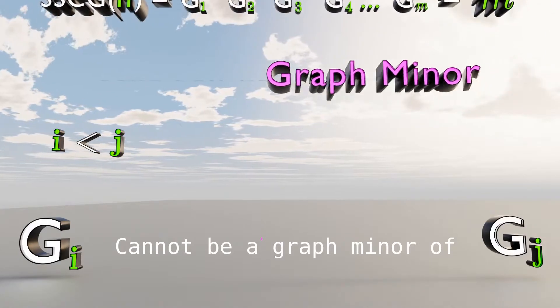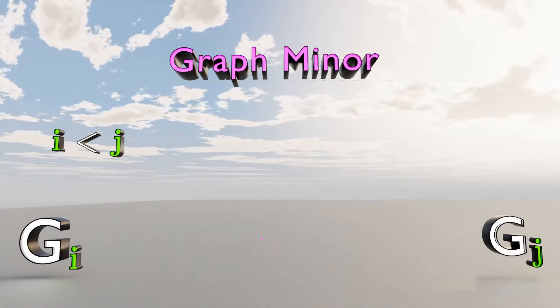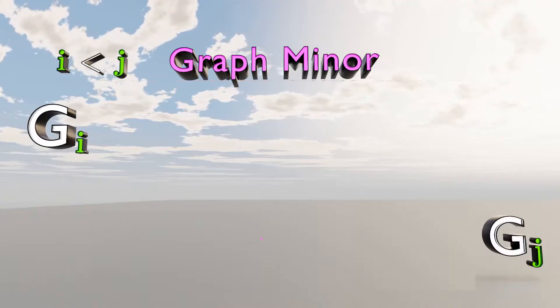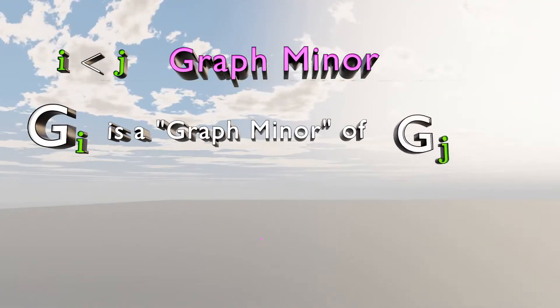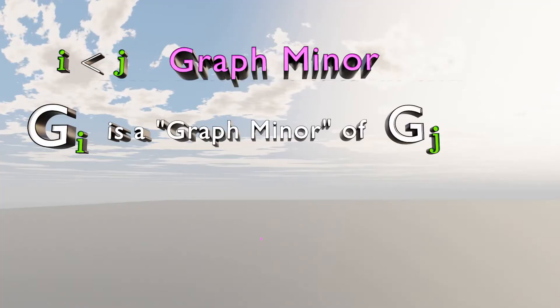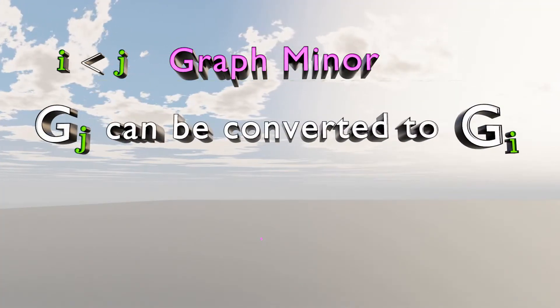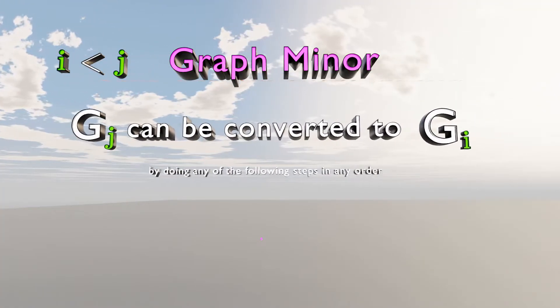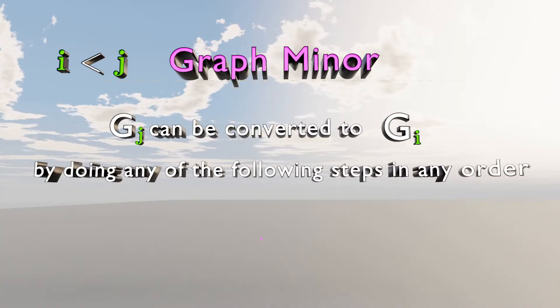Now let's talk about graph minors. Graph number I is a graph minor of graph number J if graph number J can be reduced to graph number I by doing any of the following steps in any order.